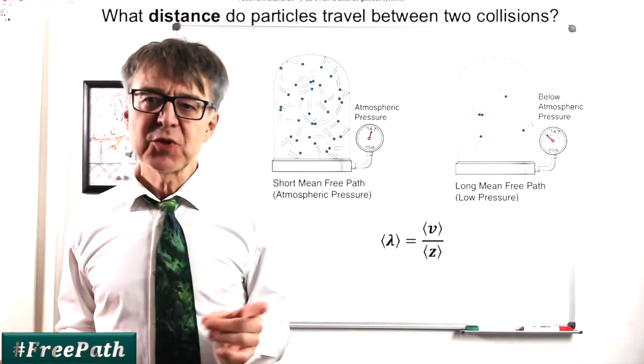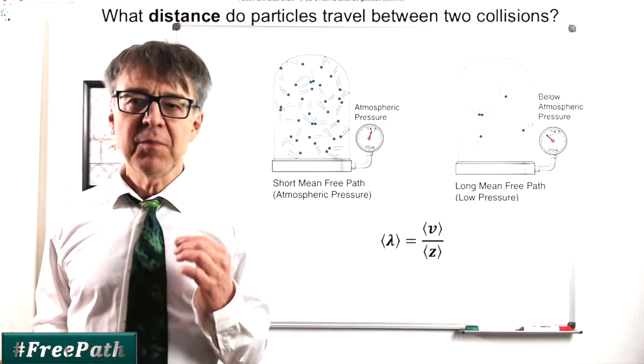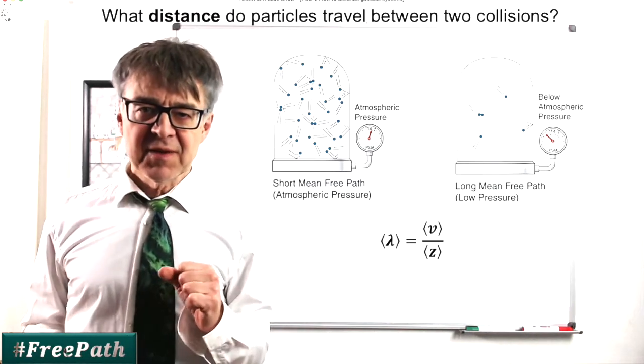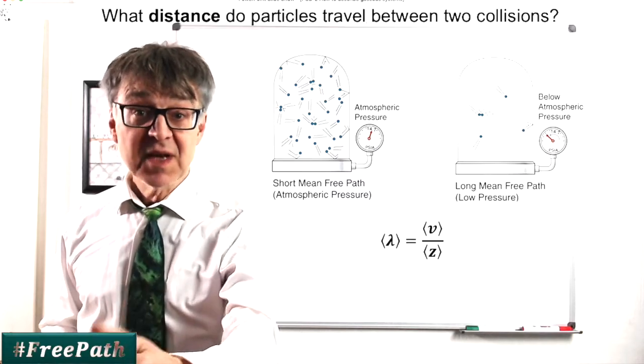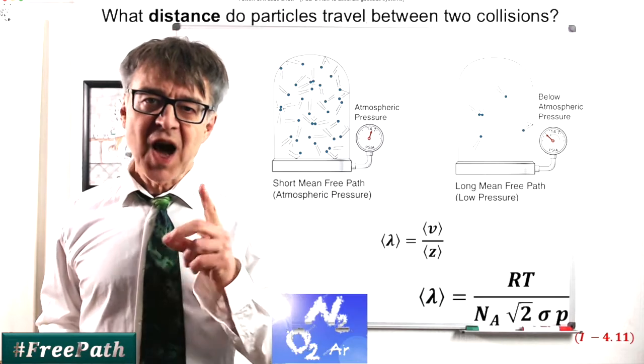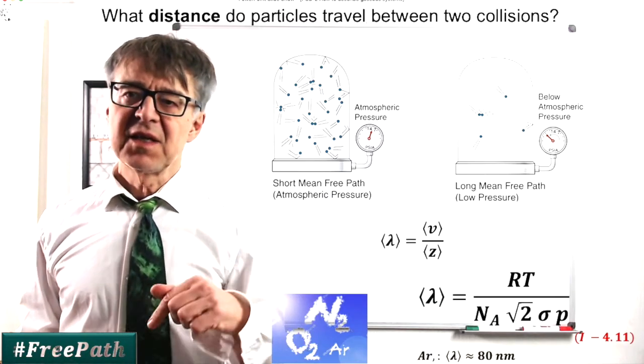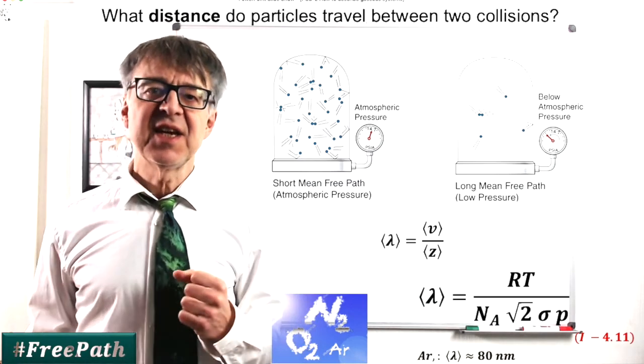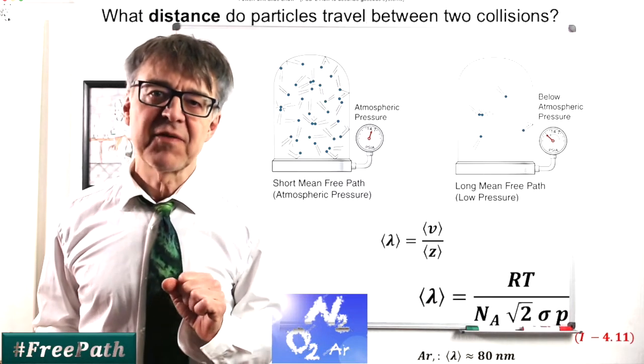If we divide the average velocity by this collision frequency, we end up with the so-called mean-free path. This important parameter indicates how far a particle travels before it collides with another particle. With argon, this parameter is 400 meters per second divided by 5 GHz equals 80 nanometers. That is less than the wavelength of light.